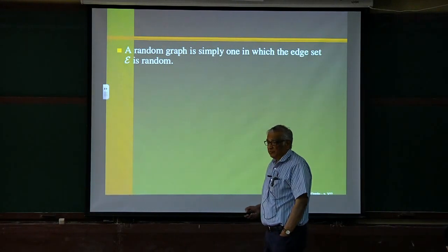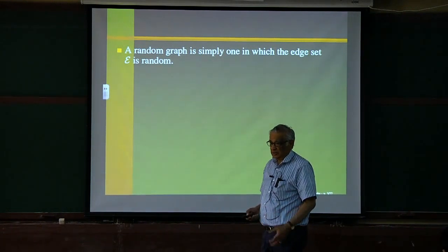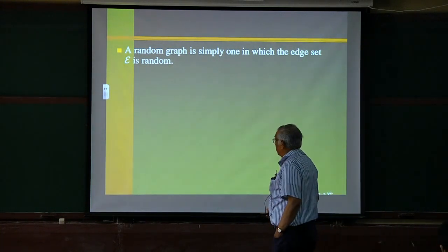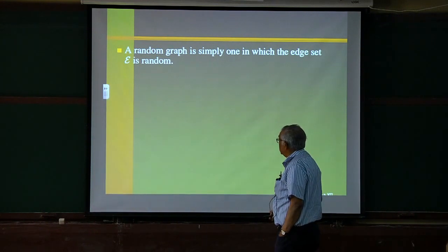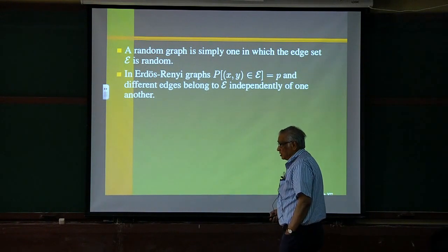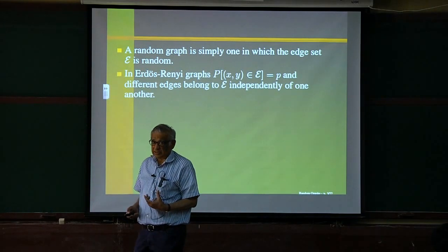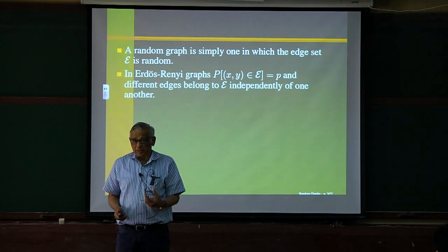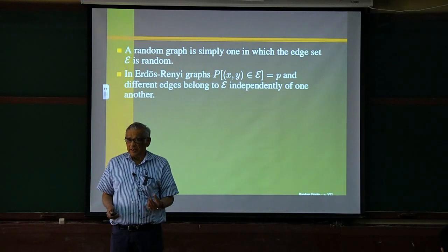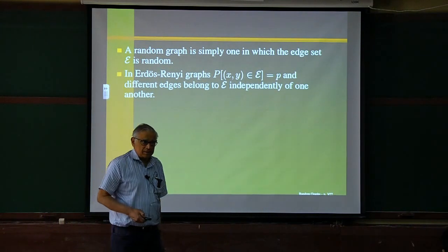A random graph is one in which this set of edges is a random set. There are various ways of specifying the probability distribution of this random set. The Erdős–Rényi graphs are those in which the probability that an edge is selected is P — that is, the edge is present with probability P and absent with probability 1−P, and different edges are independent.